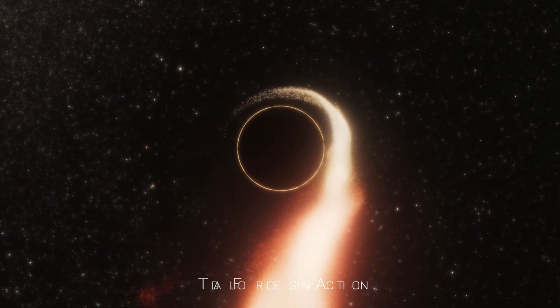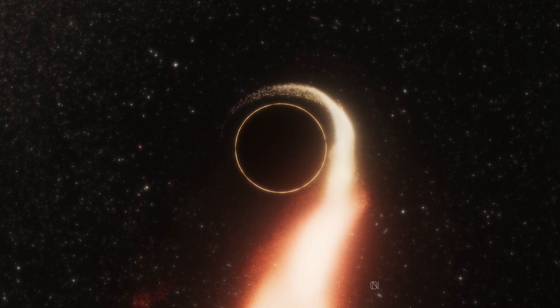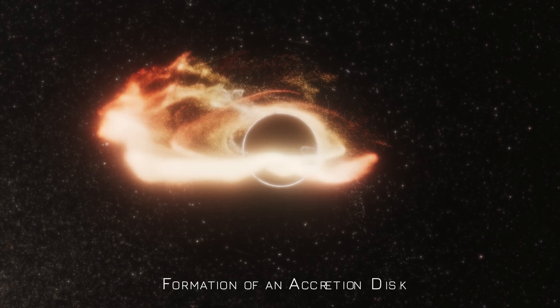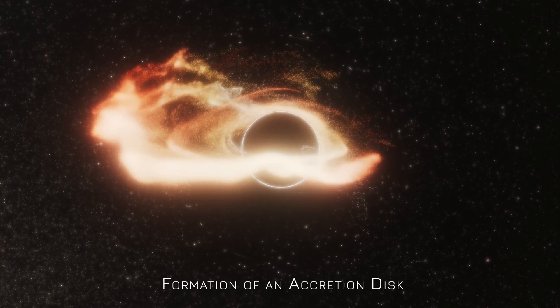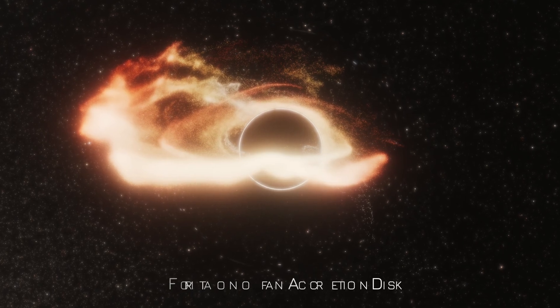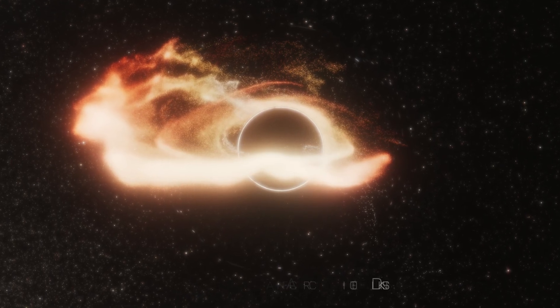Formation of an accretion disk: The stellar matter rapidly spirals around the black hole, forming a brilliant accretion disk. As the material spirals inward, it heats intensely, emitting powerful bursts of radiation.